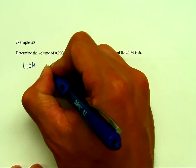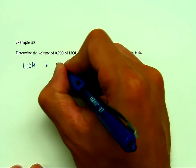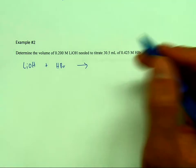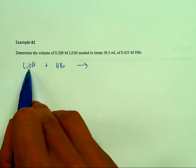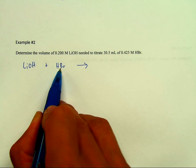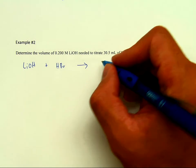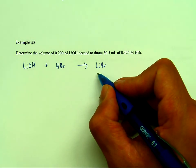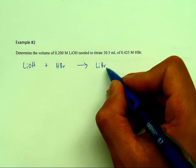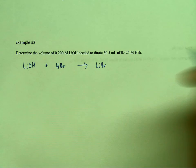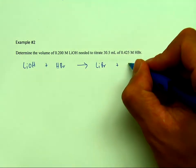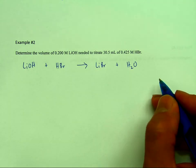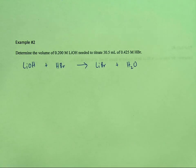Lithium hydroxide plus hydrobromic acid yields — this is the base (strong base), this is the strong acid — it yields a salt: lithium bromide. Lithium is in group one and bromide is in group seven, so plus one, minus one, this is neutral. And then we have water. Next, I like to write all of the given information beneath the equation.